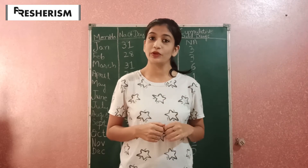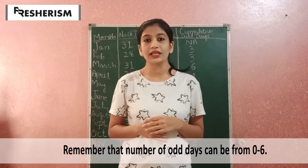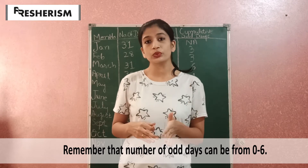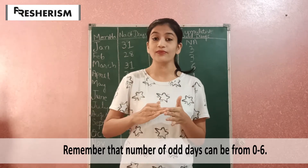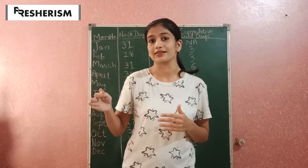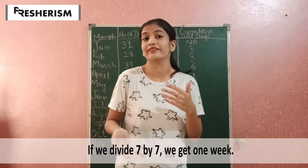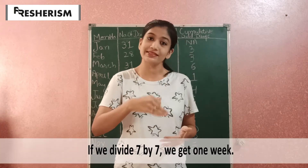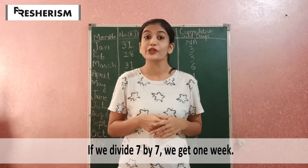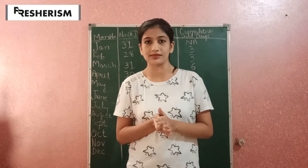One thing should be remembered: the number of odd days can be 0, 1, 2, 3, 4, 5, or 6. The maximum limit is 6. Seven days cannot be odd days because if we divide 7 by 7 itself, then this will be 1 week. So the number of odd days can only be 0 to 6.